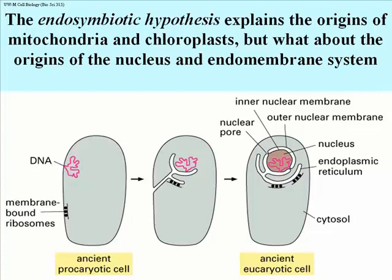Supporting the endosymbiotic hypothesis is the fact that both chloroplasts and mitochondria actually have their own DNA and make some of their own proteins. However, most of the proteins in a mitochondrion or chloroplast are not encoded on the DNA in those organelles, but are made from genes in the nucleus of the host cell, and therefore these proteins have to move from the cytosol into those organelles.